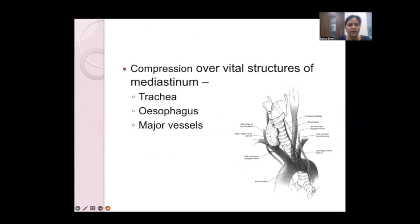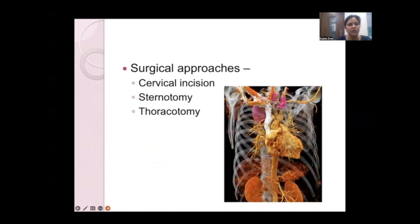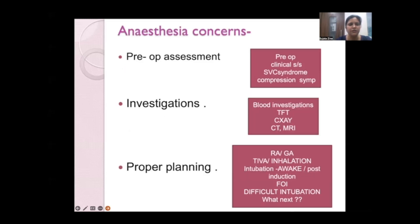Compression over vital structures is the major effect of retrosternal goiter. It may compress the trachea, esophagus, and major vessels, causing symptoms according to the structure compressed. The surgical approach is either a cervical incision, sternotomy, or thoracotomy. If thoracotomy is required, it becomes a supramajor case.